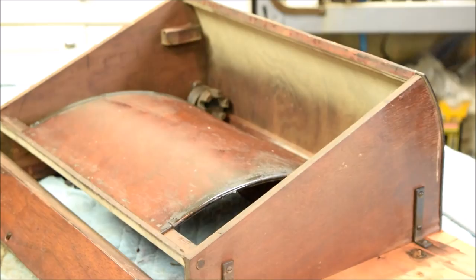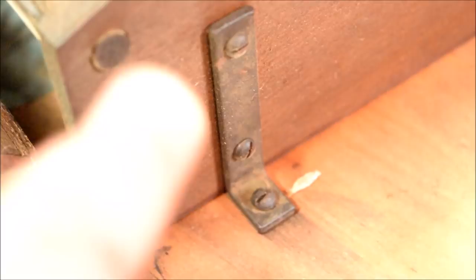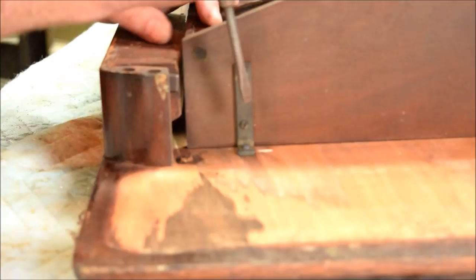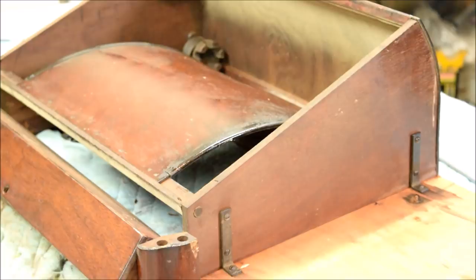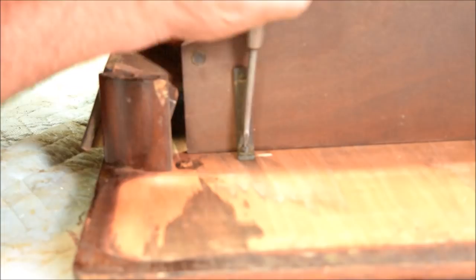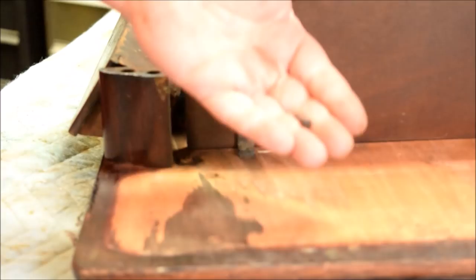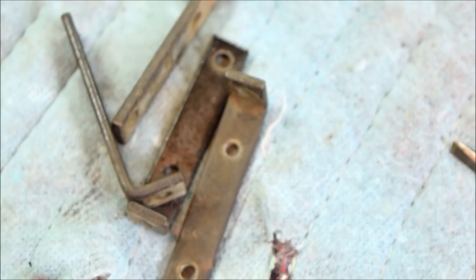And the next step is to remove this L bracket. There's four of them and they hold on this cradle assembly. And here are the L brackets removed. And here are the screws.